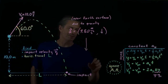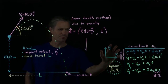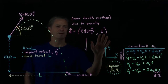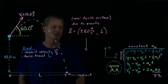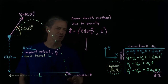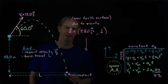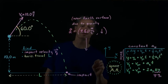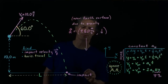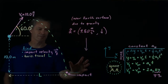Let me just summarize that coordinate system right here. With this choice of coordinate system, the acceleration due to gravity is entirely in the negative y direction and not at all in the x direction. So a sub x will be equal to zero, and a sub y will be equal to negative 9.8 meters per second per second.